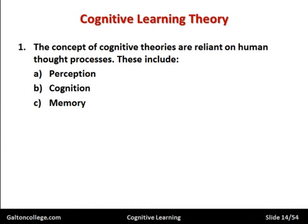We use our memory. We're constantly feeding information into our memory. We have worked out solutions to problems and file them away in our memory. So if a similar situation arises in the future, we extract the information from our memory and apply it. We have memories that are our accumulated experiences, and we can draw on these to try and make sense of situations.